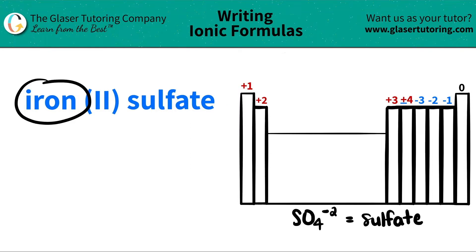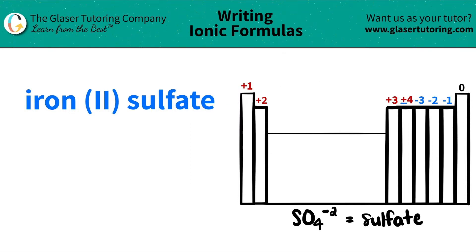The first thing that I see is iron. I'm going to scan the periodic table to see where iron is, and iron is located right here. Iron is Fe on the periodic table, so I'm going to write that down — I got Fe for iron.